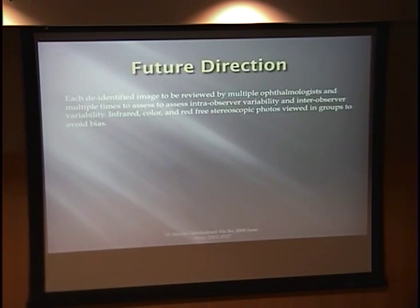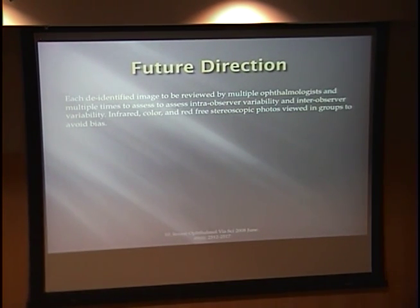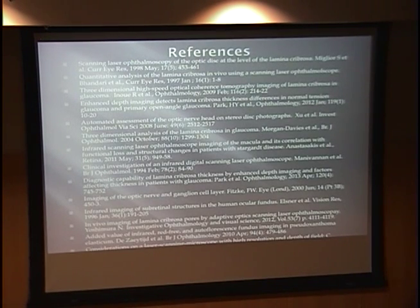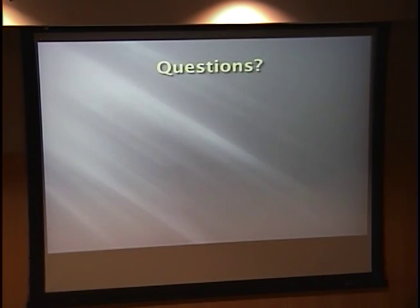A future direction is to have the images viewed by more than one ophthalmologist, and to have them measure cup to disc multiple times to assess intra- and inter-observer variability. There are a couple of other directions, but that's where we're headed for the moment. Here are my references — are there any questions?